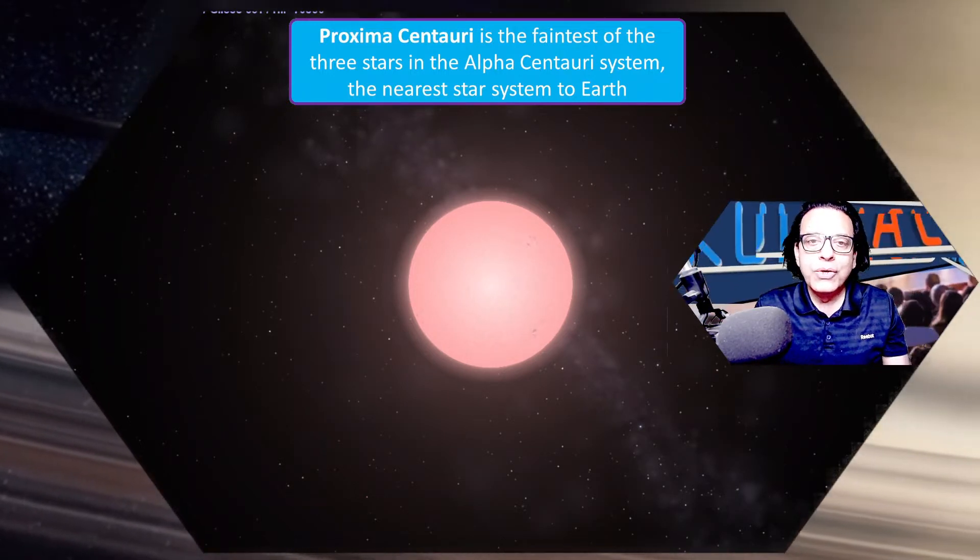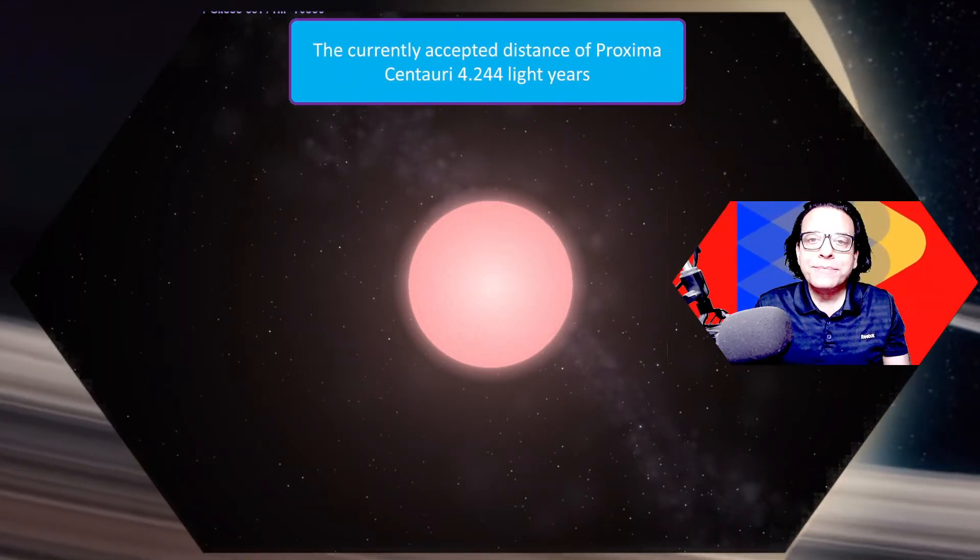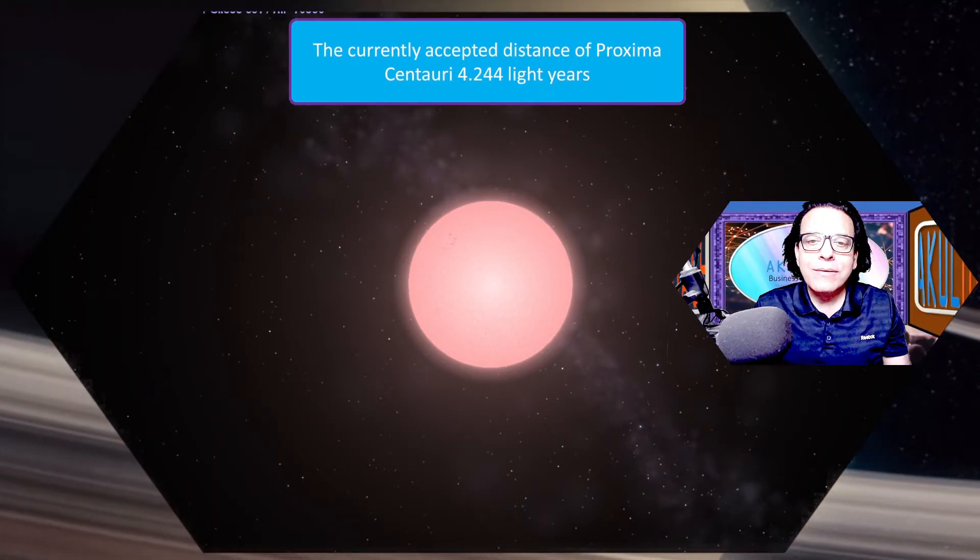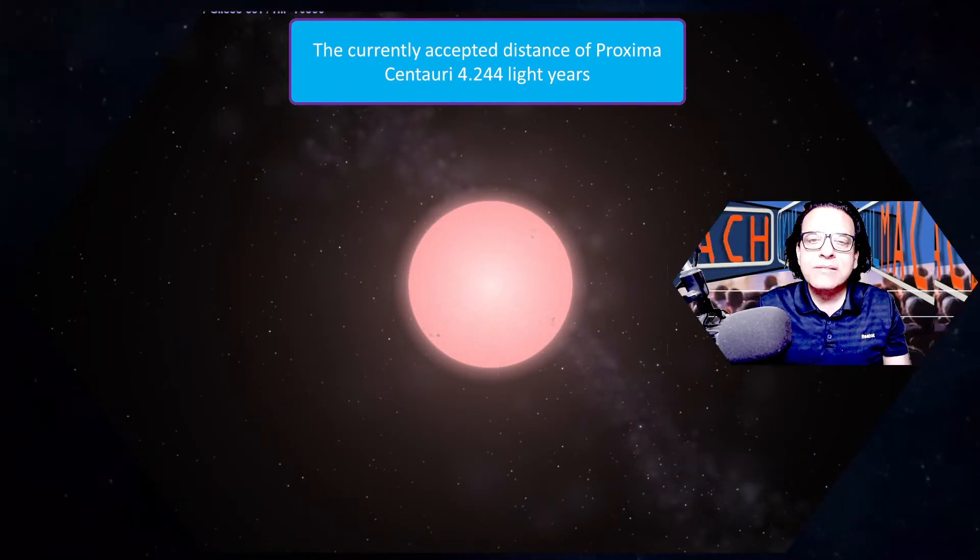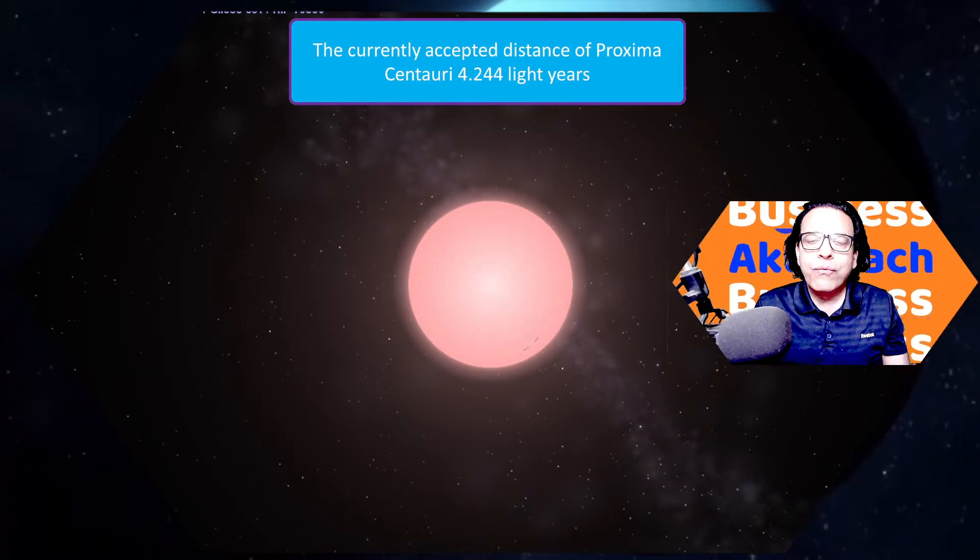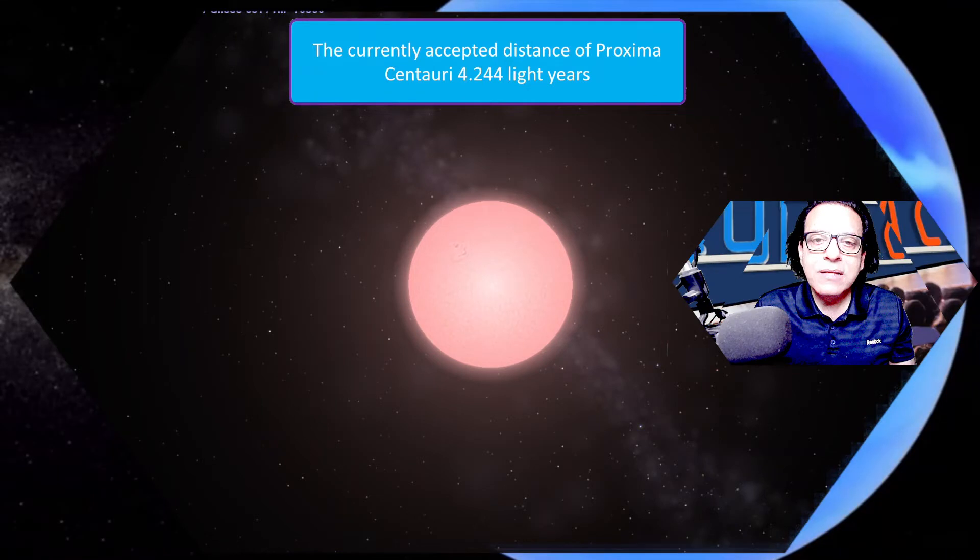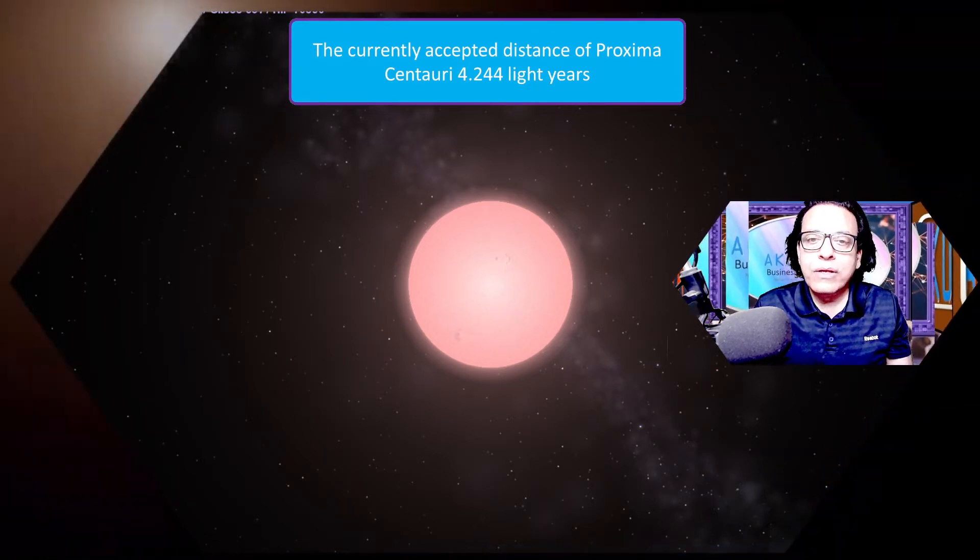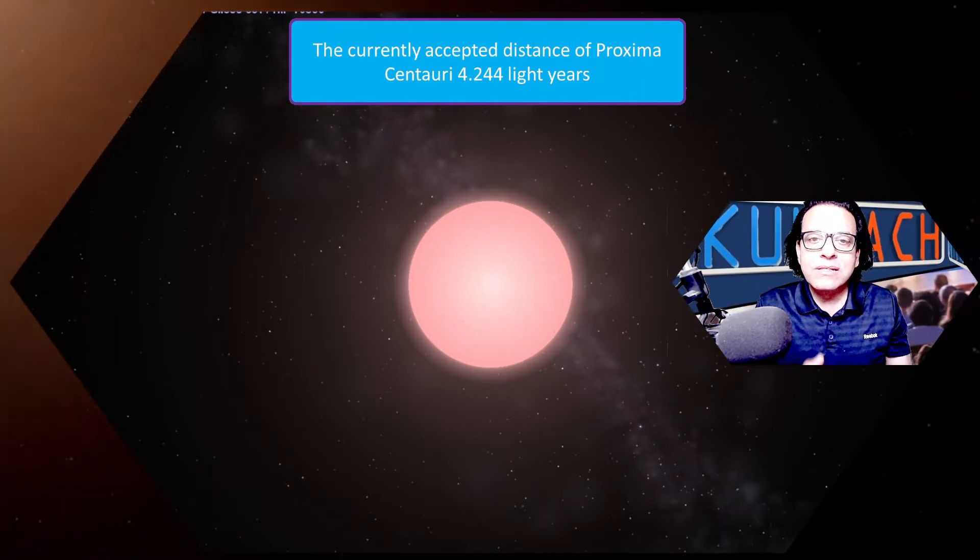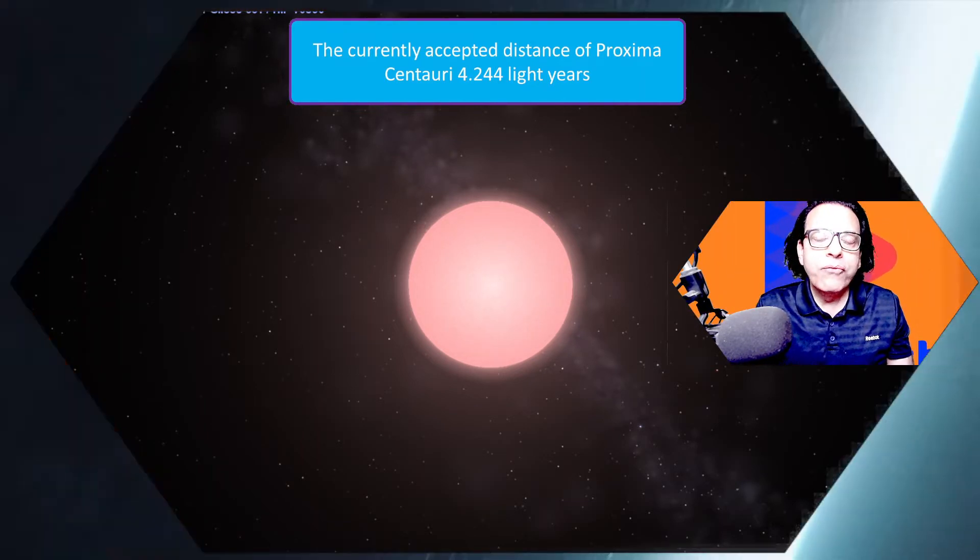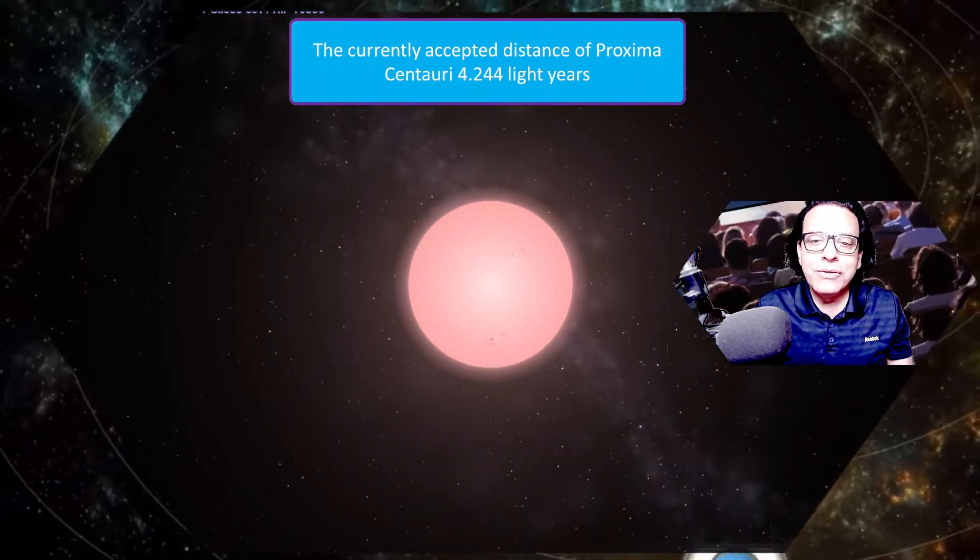Out of these three star systems, Proxima Centauri is the closest star to Earth. The entire system is called Alpha Centauri. Proxima Centauri is roughly about 4.244 light years from Earth. That means light itself takes more than four years to reach Earth. Whatever we see today on this star will be four years old from our perspective because of relativity.